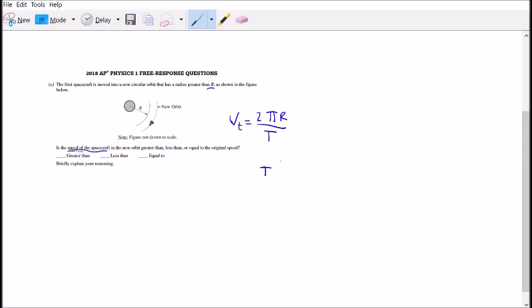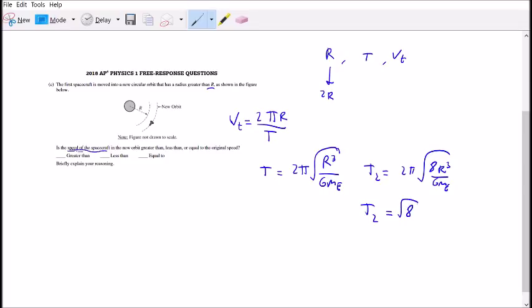If you recall the period equation from the previous question: 2π times the square root of r³ divided by G M_E. So whenever R for radius takes period T and we get V tangential speed, what happens if we get this to 2r? Let's calculate the new period first. T₂ is going to be 2π, and if we place 2r instead of r, we get the square root of 8r³ divided by G M_E. So technically T₂, the new period, will be square root 8 times more than the first period.